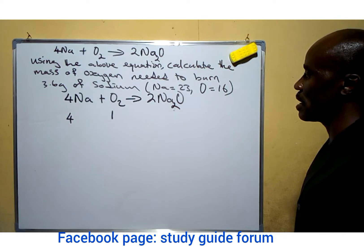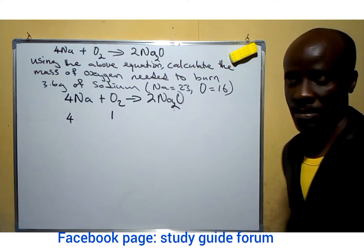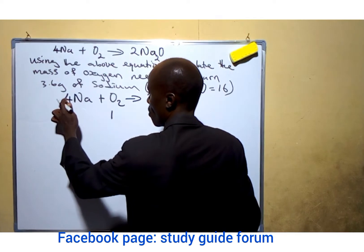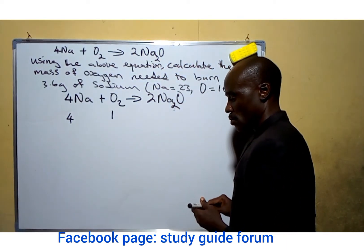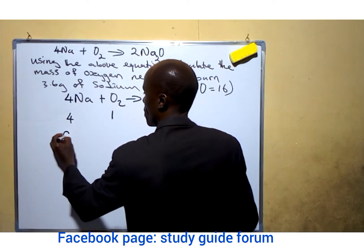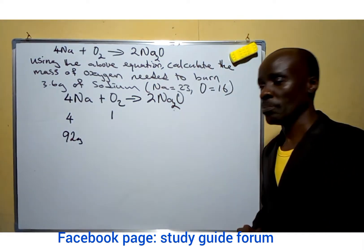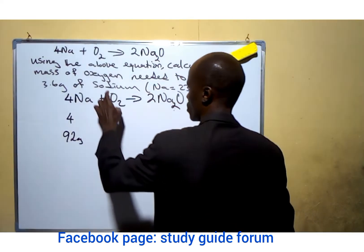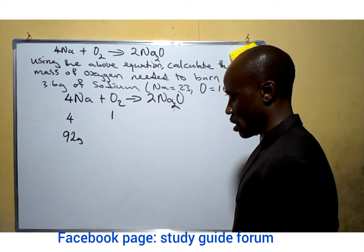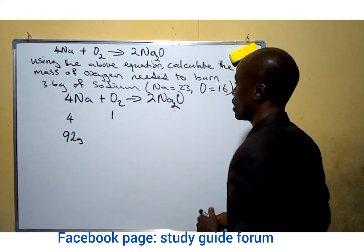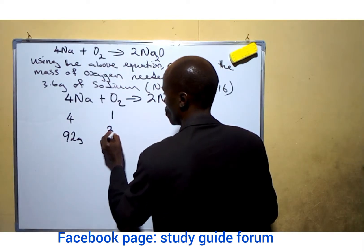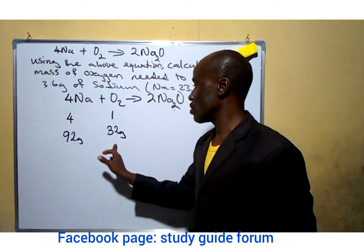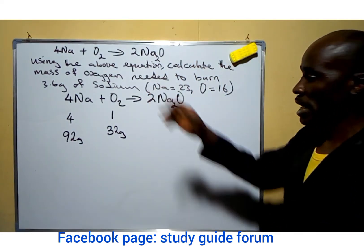Another thing we can see here is the reacting masses from the chemical equation. The reacting mass of sodium is 4 moles multiplied by 23, which gives us 92 grams of sodium. For oxygen, we have 16 times 2, which gives us 32, and 32 times 1 gives us 32 grams — that is the reacting mass of oxygen from the chemical equation.